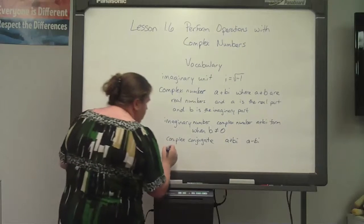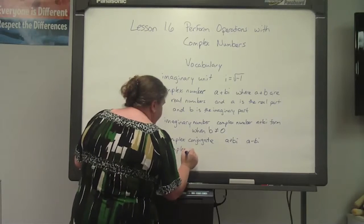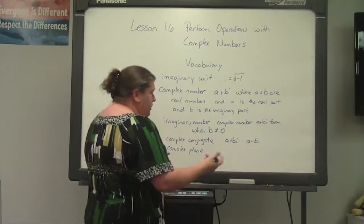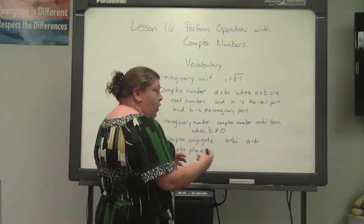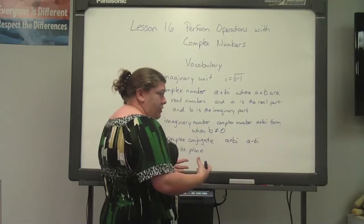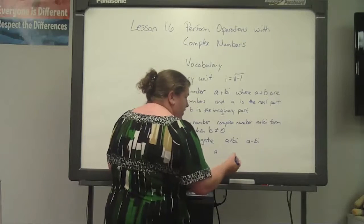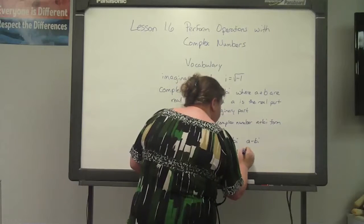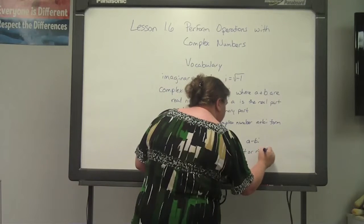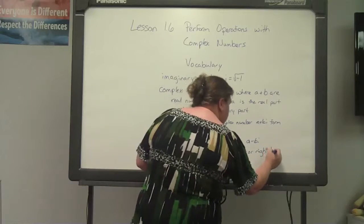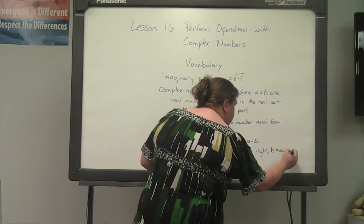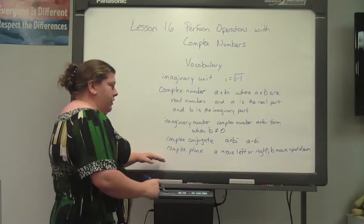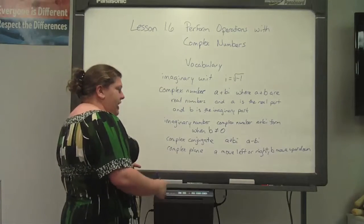The complex plane is how you graph a complex number. What we would consider the x-axis is your a, which is where you move horizontal — left or right. And then your b moves up or down. So in your complex plane, your a moves left or right, and your b is up or down.